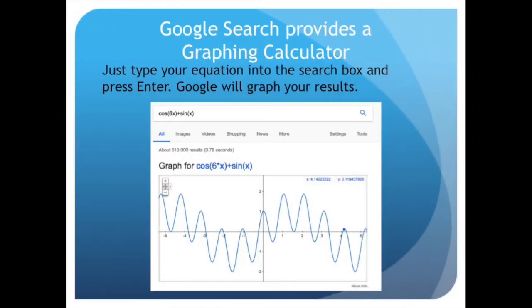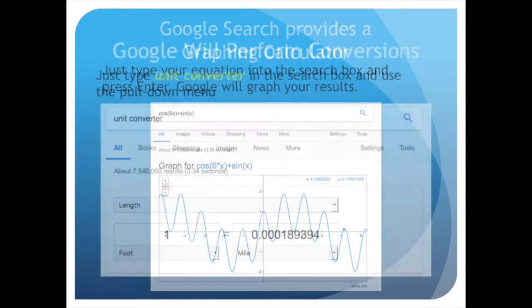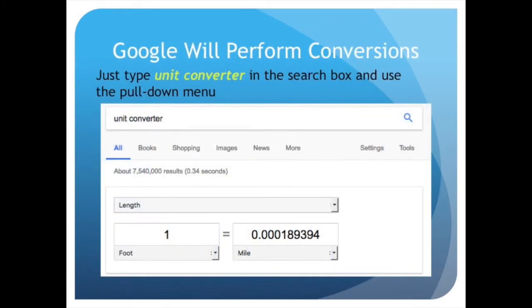Google search also provides a graphing calculator. Just type your equation into the search box and press enter, and Google will graph your results. For unit conversions, just type 'unit converter' in the search box and use the pull-down menu.